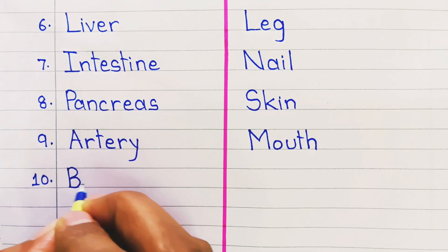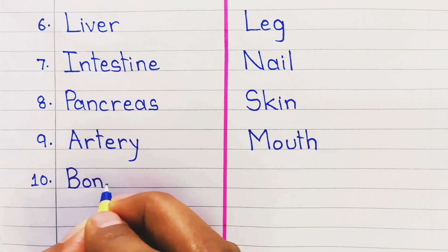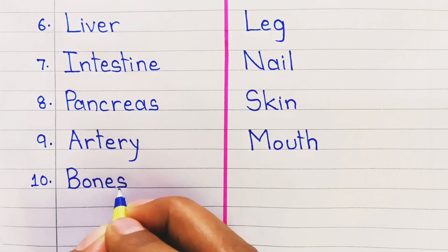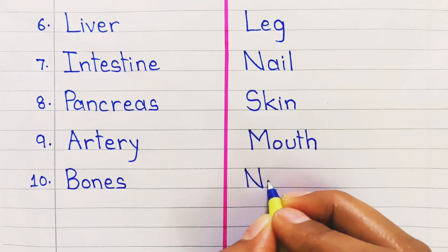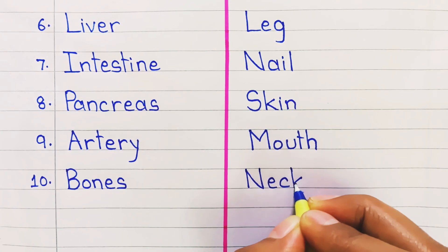10. Internal organ is bones. External organ is neck. Thank you for watching.